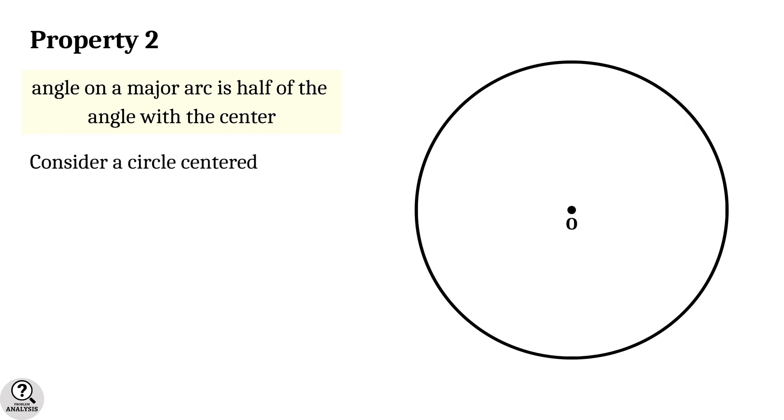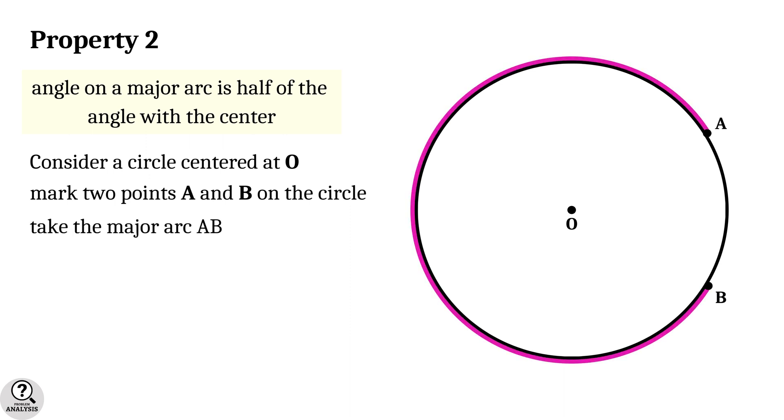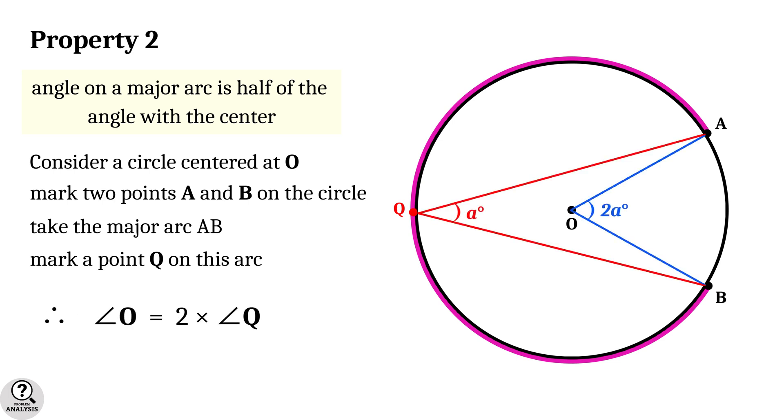Now, property 2: The angle on a major arc is half of the angle with the center. Consider a circle, center at the point O. Now mark two points A and B on the circle. Take the major arc AB and mark a point Q on this arc. Then the fact is that angle at O is equal to 2 times the angle at Q.